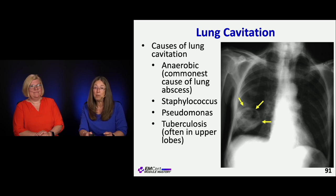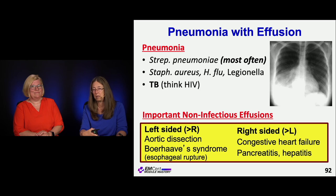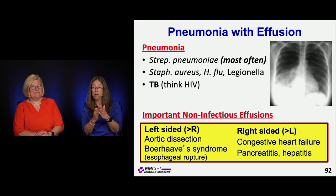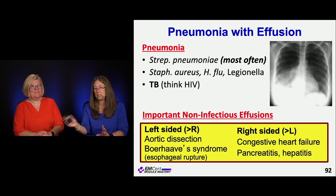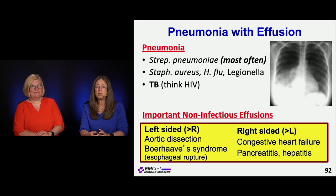Pneumonia with effusion: the most common cause is Streptococcus pneumoniae, which causes a parapneumonic effusion — not necessarily an empyema, just fluid in the periphery. Other organisms causing effusion include Staph aureus, H. flu, Legionella, and TB. In children with TB, pleural effusion is common, especially in HIV-positive patients where TB and effusion go together. Non-infectious causes of pleural effusion include CHF, aortic dissection, Boerhaave's syndrome, pancreatitis, and hepatitis — these generally do not cause fever.